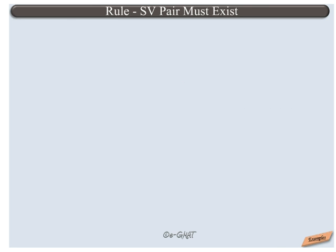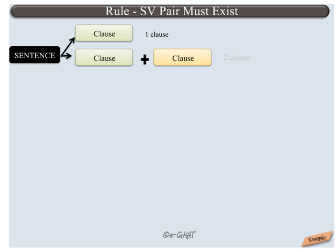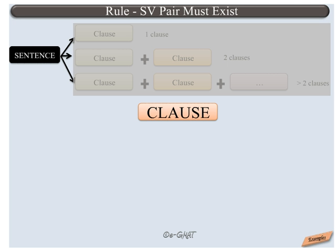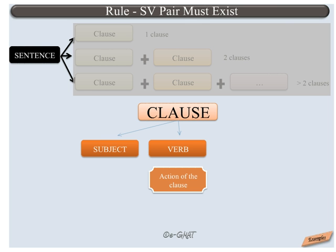Let's understand this rule. As we know, a sentence is composed of one or more clauses. Thus, a clause is a building block of a sentence. Let's now review the building blocks of a clause. A clause must contain a verb — the action of the clause — and it must also contain a subject, which is the doer of this action.